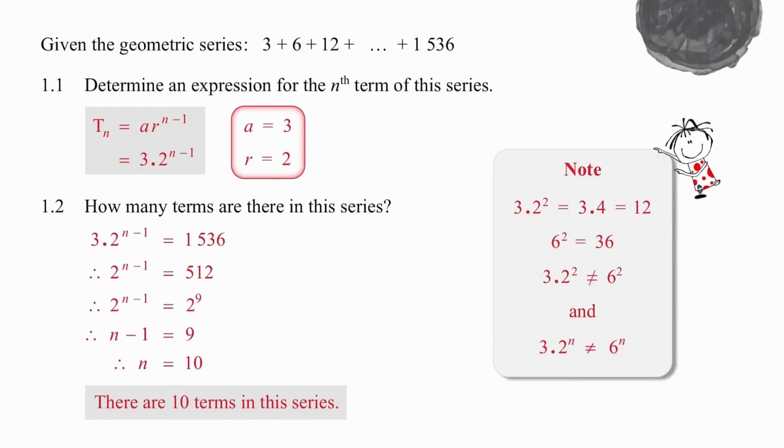In order to answer any question in a geometric series, you need both the a value and the r value. a is easy because it's given. The r value, we simply take any two terms that are consecutive, and we divide the term further on by the preceding term. So we can either divide 12 by 6 to get 2, or 6 by 3. Either way, we will come out with 2. So we know the a value and the r value, and we are given Tn equals ar to the n minus 1 on our formula sheet. We substitute, and our job is done.